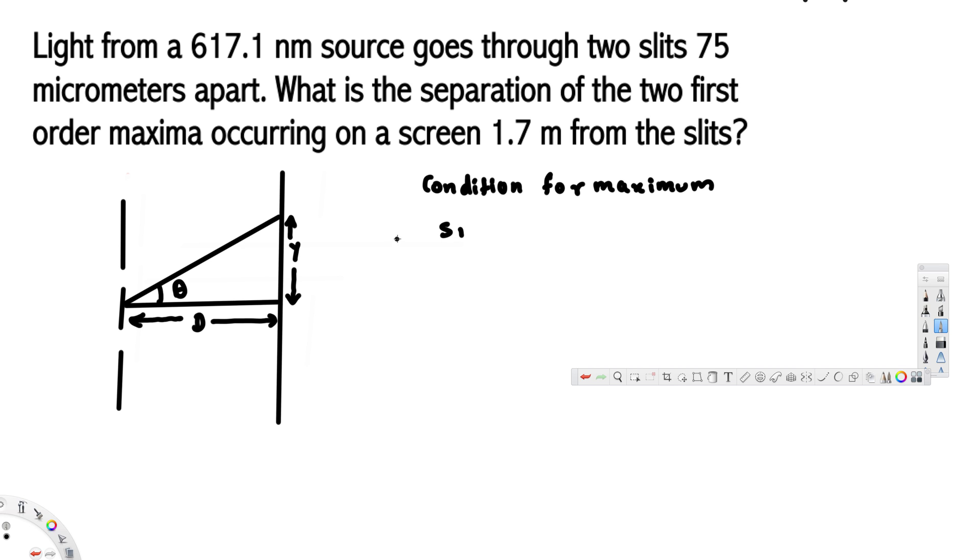d sin θ = mλ. And if you look at this, when we have a small angle, we can say sin θ is equal to tan θ. From this diagram you can see tan θ is going to be opposite over adjacent: y over d. So instead of sin θ, we can replace this with y/d, and this equals mλ.